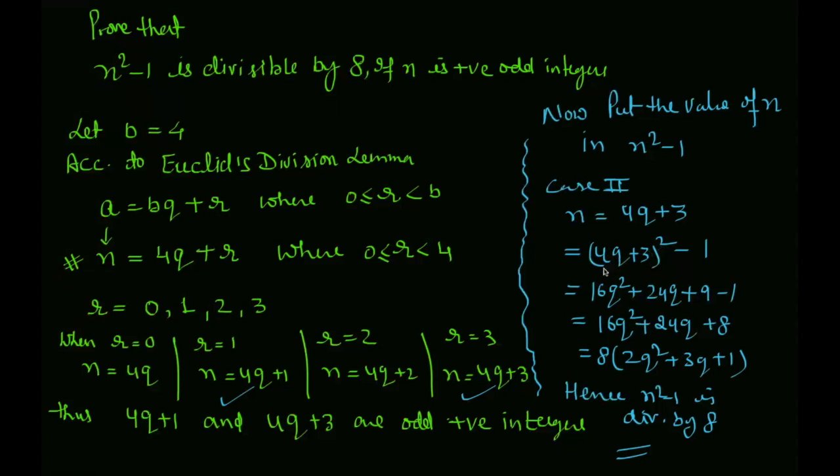4q whole square is 16q square. 2ab is 24q. Plus 3 square is 9, minus 1. 9 minus 1 is 8. Taking 8 common, we get 2q square plus 3q plus 1. This term is also divisible by 8.